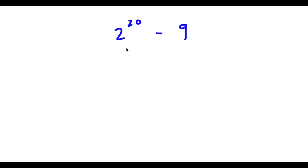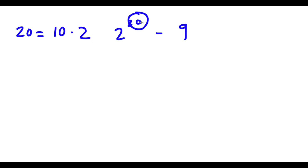Alright, so I have 2 to the power of 20 minus 9. Now 2 to the power of 20 — the exponent 20 is the same thing as 10 times 2. So now I can rewrite this as 2 to the power of 10 times 2, minus 9.